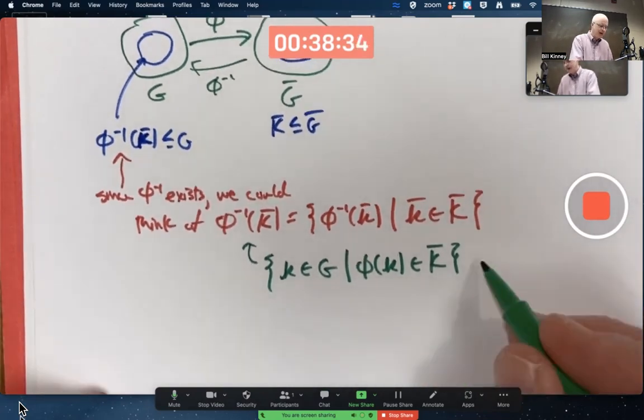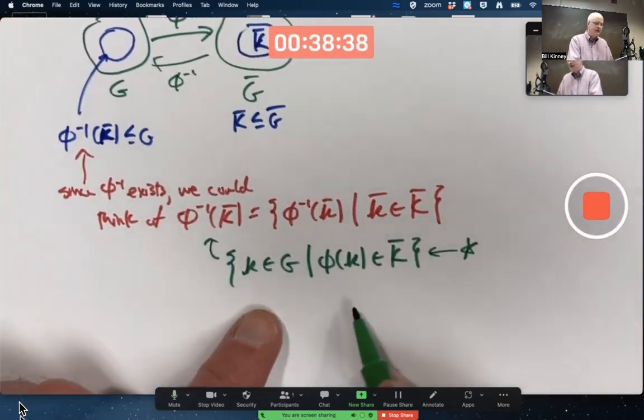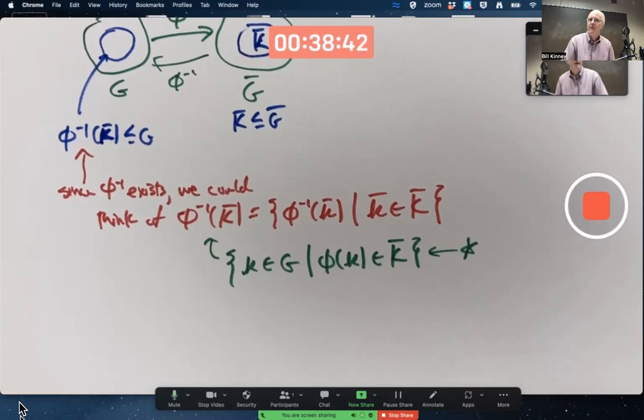But the benefit of writing it this way is that you can even write such a thing when φ is not one-to-one or onto. And in chapter nine, that's going to be a big deal. Instead of the concept of an isomorphism, we're going to have the concept of something called a homomorphism, which is operation preserving, but not necessarily one-to-one or onto.